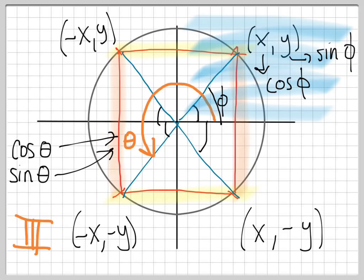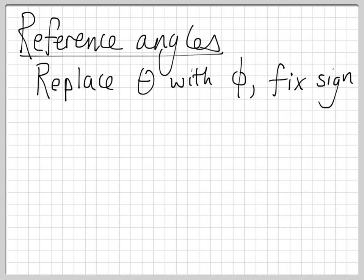How do you figure out the right one to use? The angle phi — the most important angle to us — is just based on how far away from the x-axis you are in all the other quadrants. The mantra you want to think about with reference angles is: replace the angle you're given with how far away it is from the x-axis, and then fix the sign so it matches.